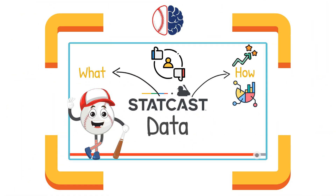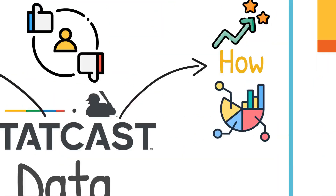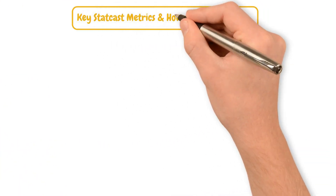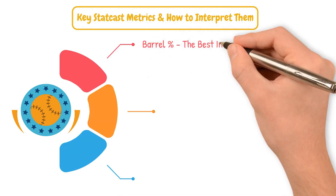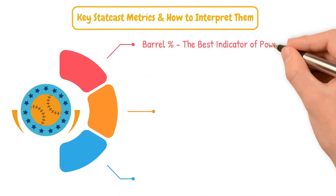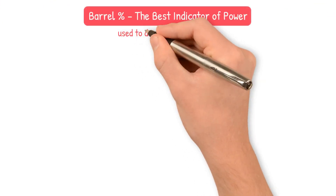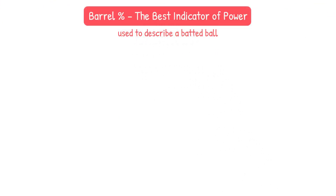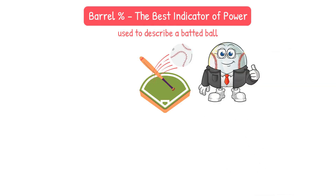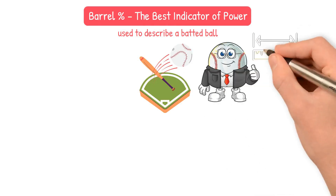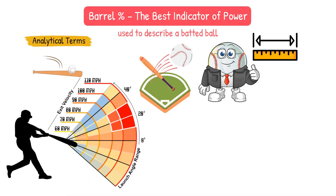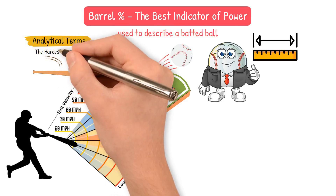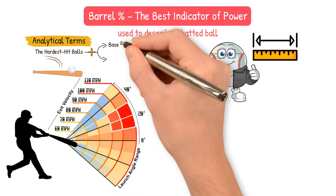But knowing how StatCast works is just the beginning. The real question is, how do we use all of this data? Let's break down some of the key metrics and what they actually tell us about player performance, starting with barrel percentage. Barrel percentage is the best indicator of power. A barrel is a batted ball with the optimal combination of launch angle and exit velocity — the hardest hit balls that lead to extra base hits and home runs.